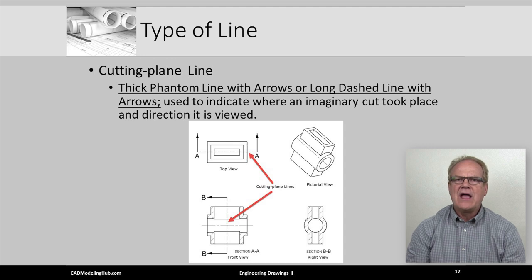In the American ASME standard, the cutting plane line has two different styles. Both of these line styles are thick. One uses an alternating pattern of long, short, long dashes, like a thickened center line, and the other uses a pattern of long dashes. Either cutting plane pattern uses arrows to indicate the direction one should view the section. So, in the top view, I've used the thickened center line pattern, and in the front view, you can see the cutting plane line made from long dashes.